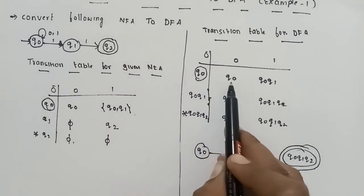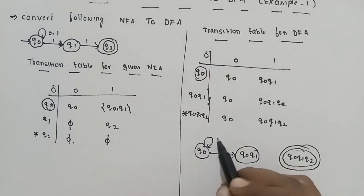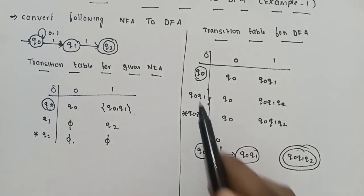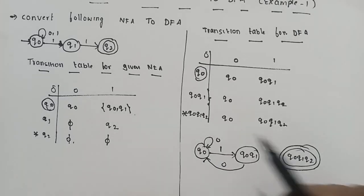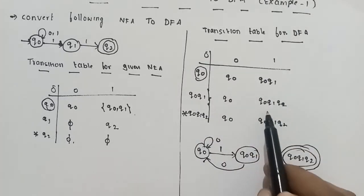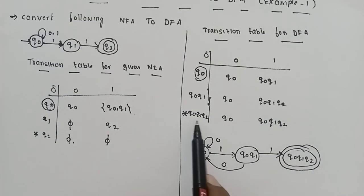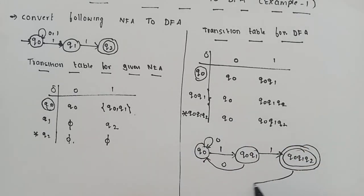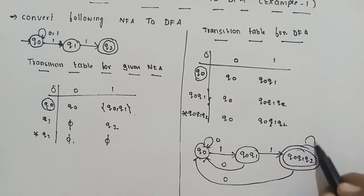To summarize the DFA transition table: Q0 on 0 goes to Q0, and Q0 on 1 goes to {Q0, Q1}. {Q0, Q1} on 0 goes to Q0, and {Q0, Q1} on 1 goes to {Q0, Q1, Q2}. {Q0, Q1, Q2} on 0 goes to Q0, and {Q0, Q1, Q2} on 1 goes to {Q0, Q1, Q2}.